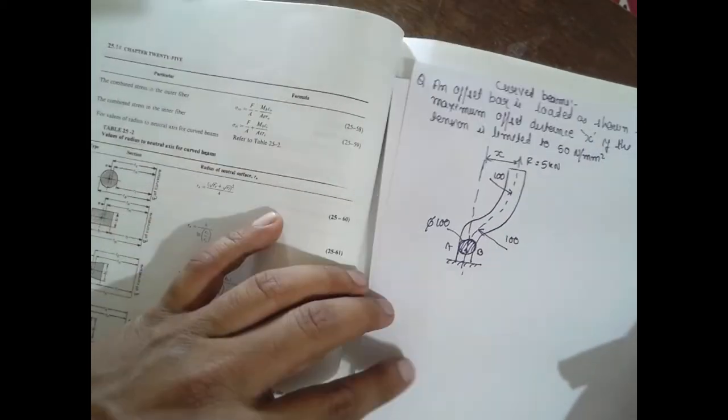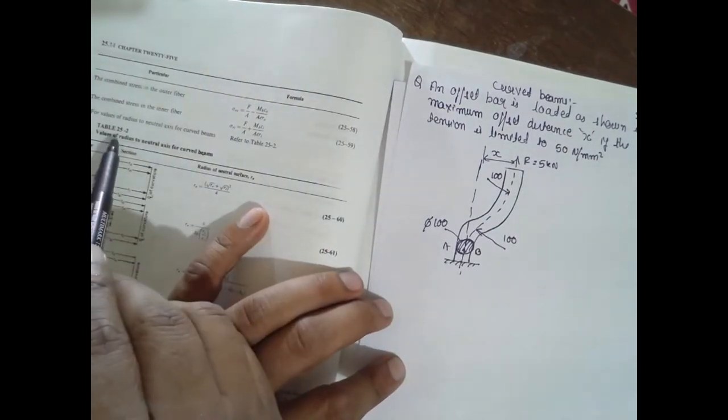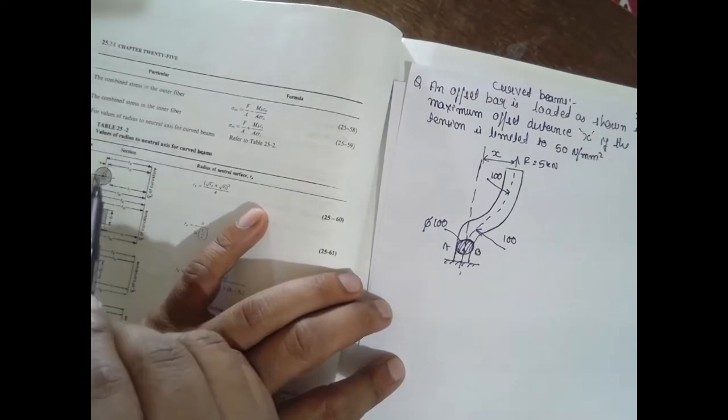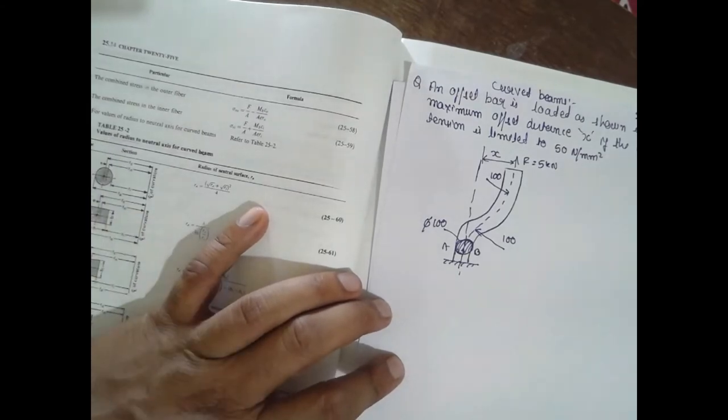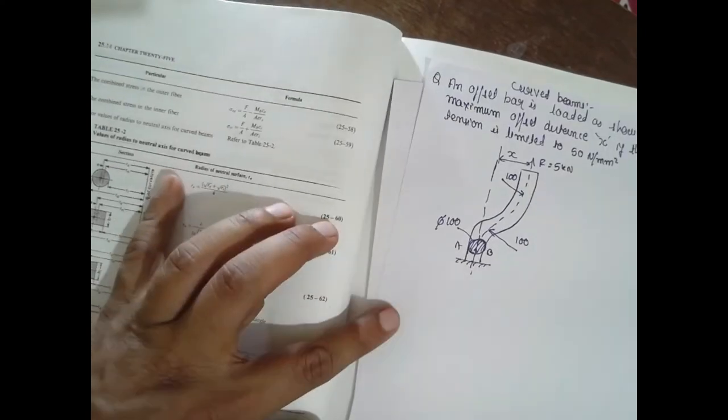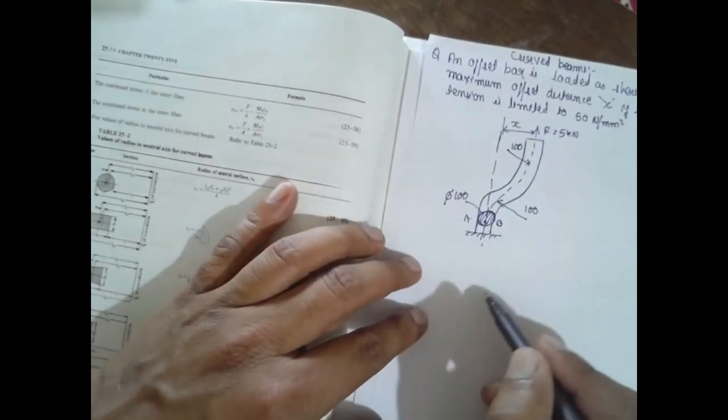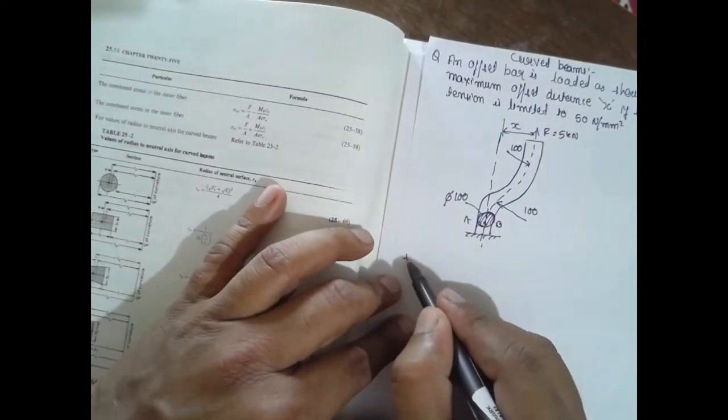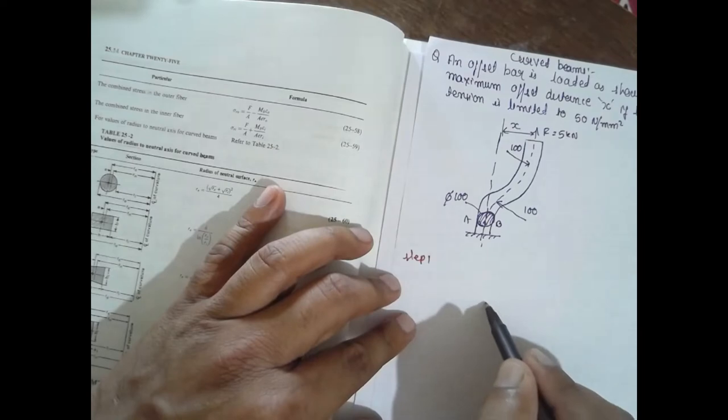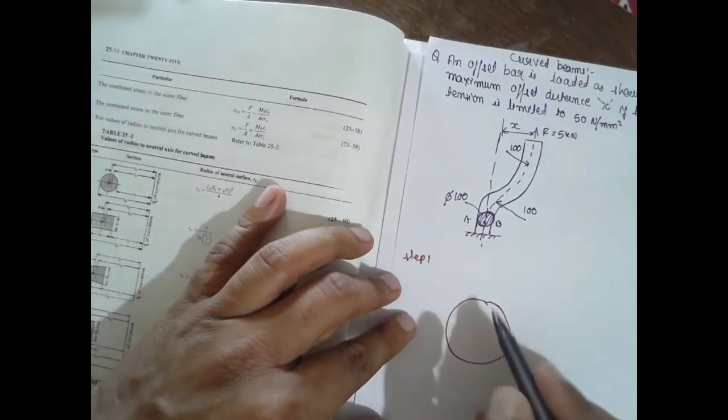The linear data handbook, page number 24.14, table 25. Here is the circular section. Draw the circular section here similar to the data handbook. This is step one. We consider this step one: circular section. Draw the circular section.